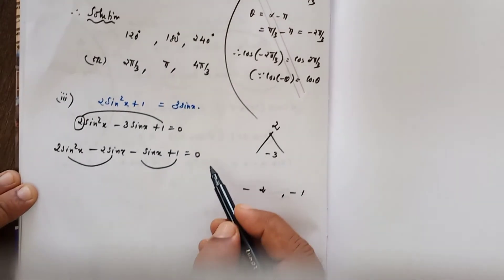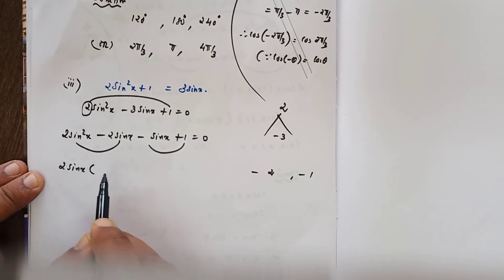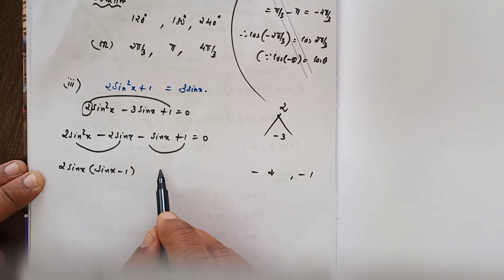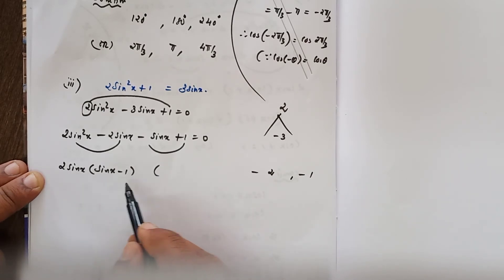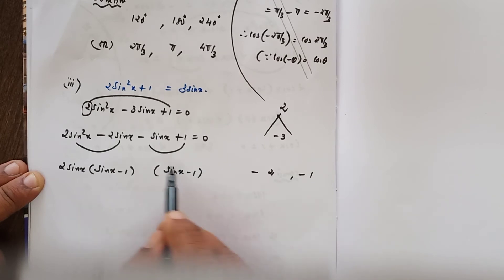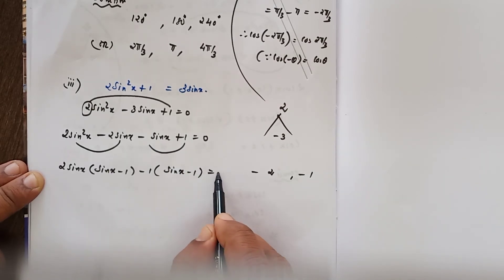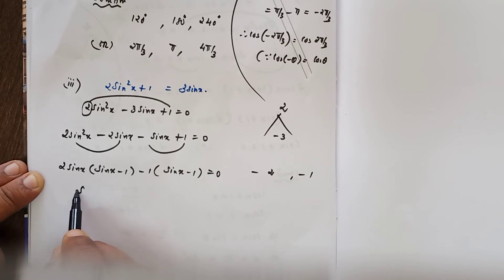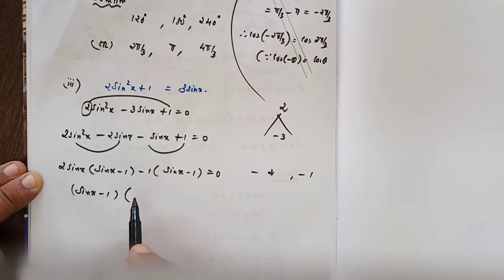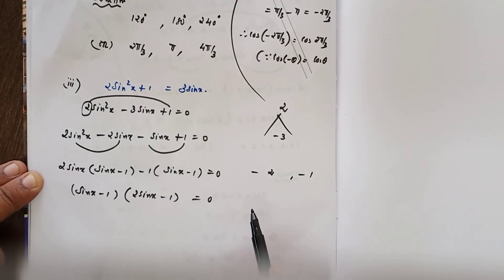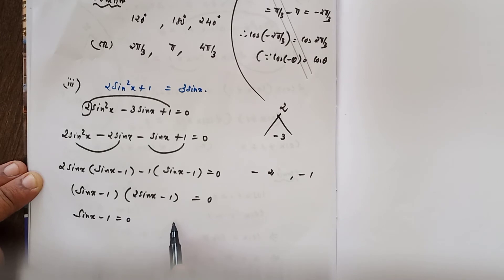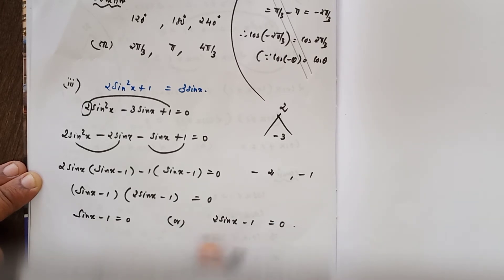Grouping: take 2sinx as common from the first two terms to get 2sinx(sinx minus 1). From the last two terms, take minus 1 as common to get minus 1·(sinx minus 1) equals 0. Between the two groups, take (sinx minus 1) as common: (sinx minus 1)(2sinx minus 1) equals 0. So sinx minus 1 equals 0 or 2sinx minus 1 equals 0.